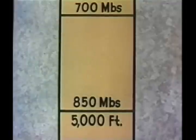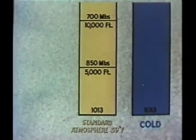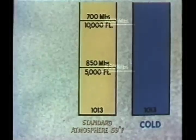Let us see how the vertical pressure gradient varies with the temperature within the column of air. In the standard atmosphere, the 850 millibar level is at 5,000 feet, and the 700 millibar level is at an altitude of 10,000 feet. In cold air, the density of the air is increased and the isobaric surfaces are lower, thus the vertical pressure gradient is increased.